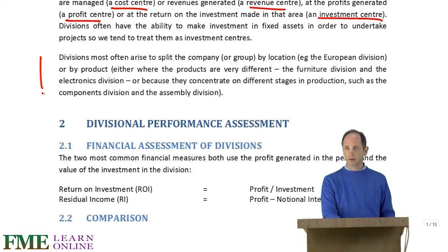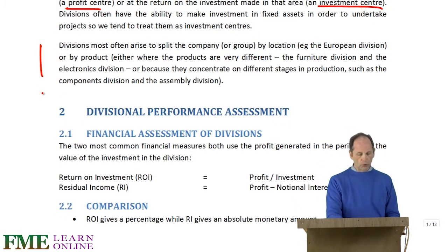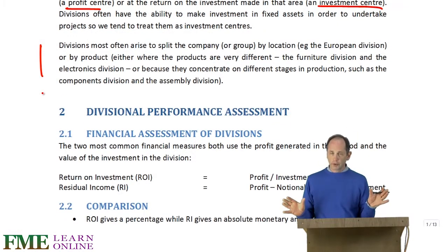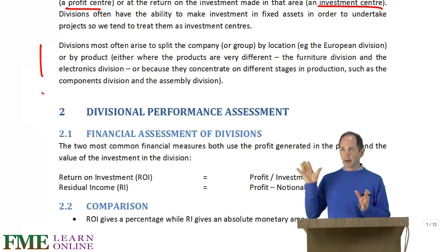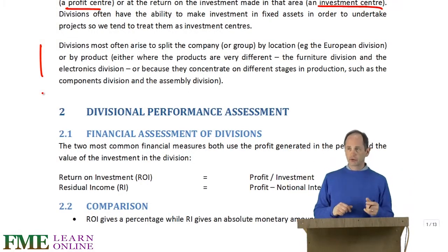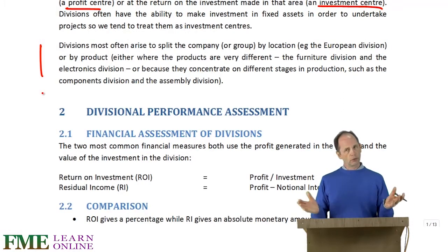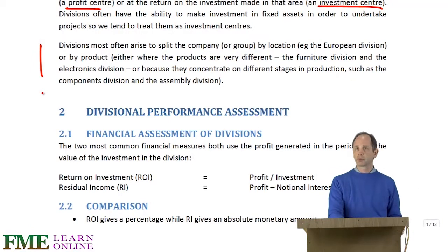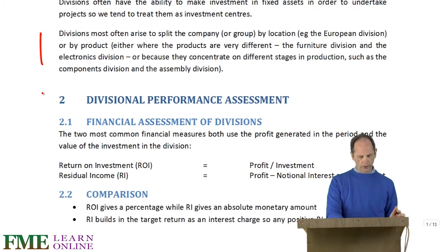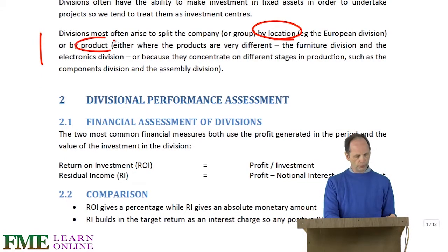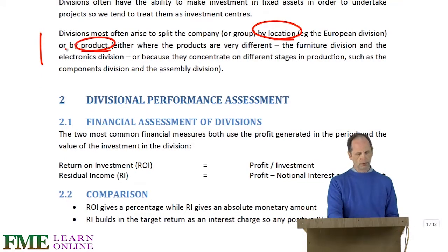Everything - research, development - is totally different. Or it might be geography: you might have an African division, an Asian division, an American division, a UK division, a North division, a South division, and so on, because otherwise a production manager is constantly zipping between various locations. So it's either to do with location or product, because they are very different.